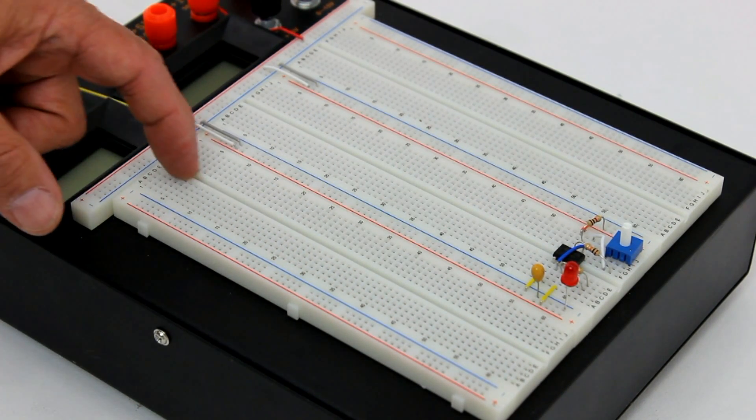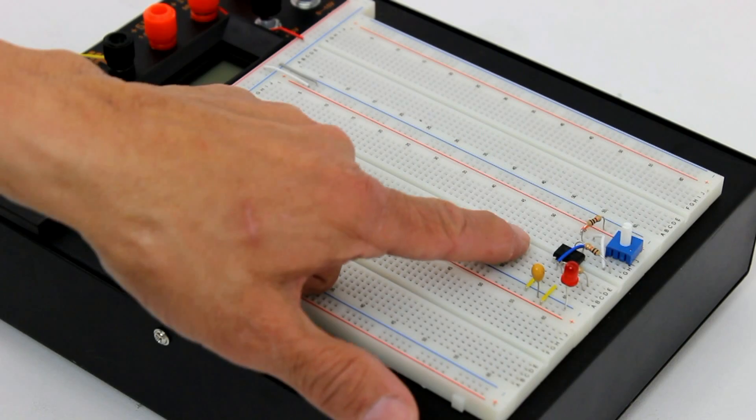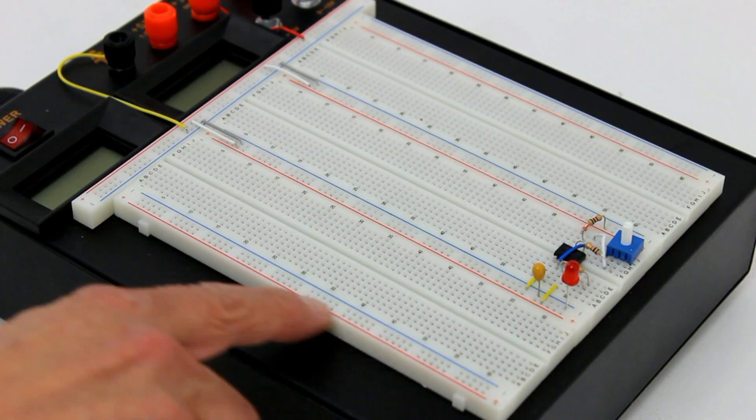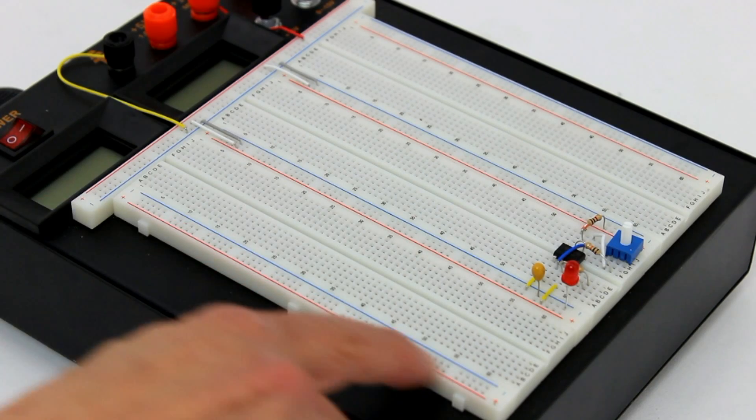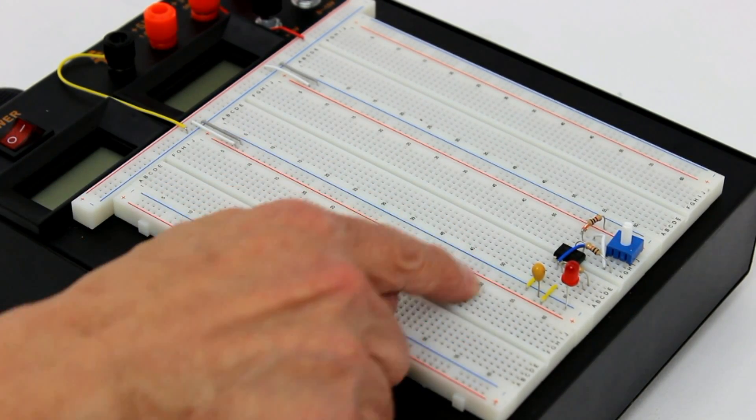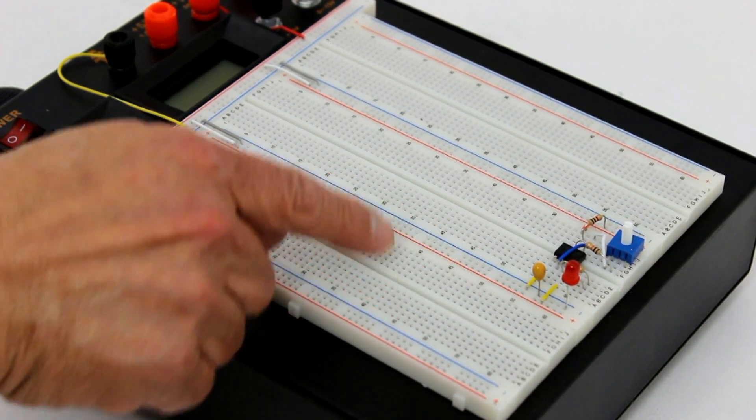Additionally, the rows of contacts are separated by an insulated area that provides proper placement of standard DIP type integrated circuits. Note that the power and ground buses have contact arrangements in the x direction, but the contact rows used for the components are arranged in the y direction.